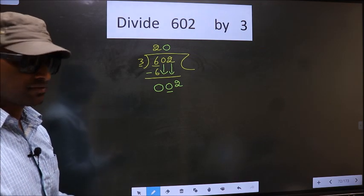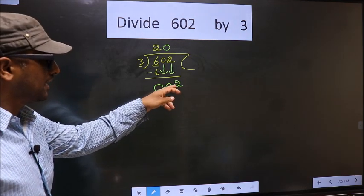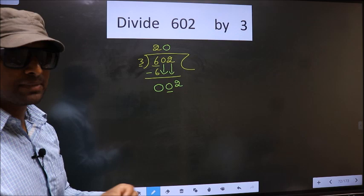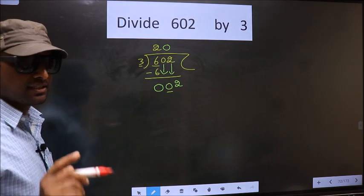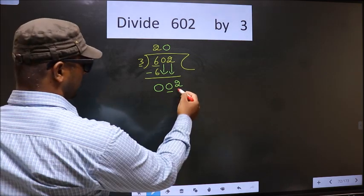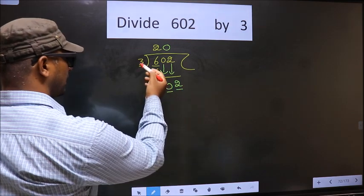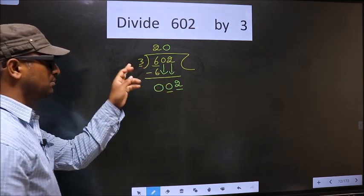Okay, now after bringing down 2, this is where the mistake happens. Here we have 2 and here 3. 2 is smaller than 3.